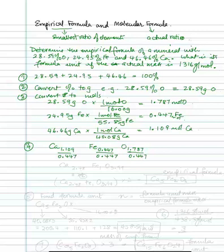And then this comes out to be calcium, 2.48. Iron comes out to be 1 because it's divided by itself, and then oxygen comes out to be 3.99.